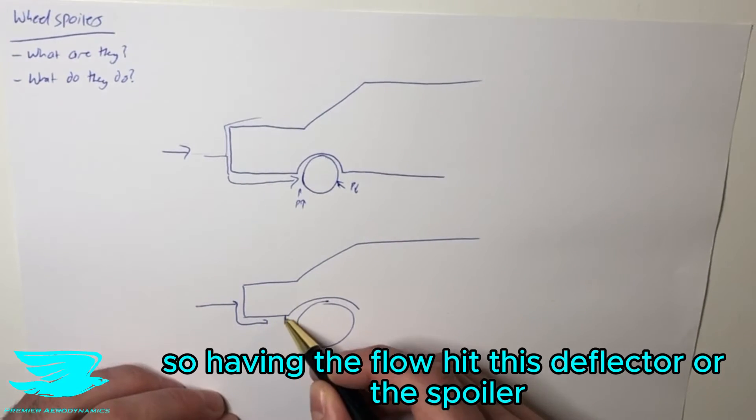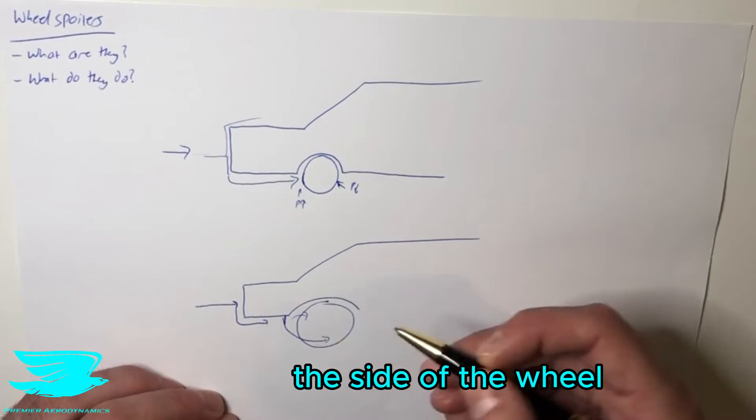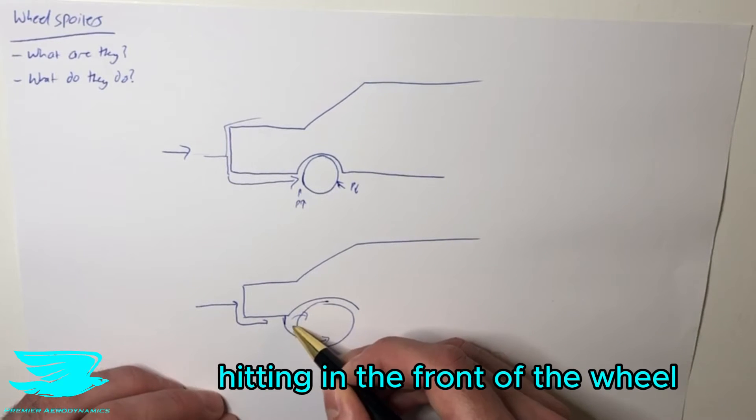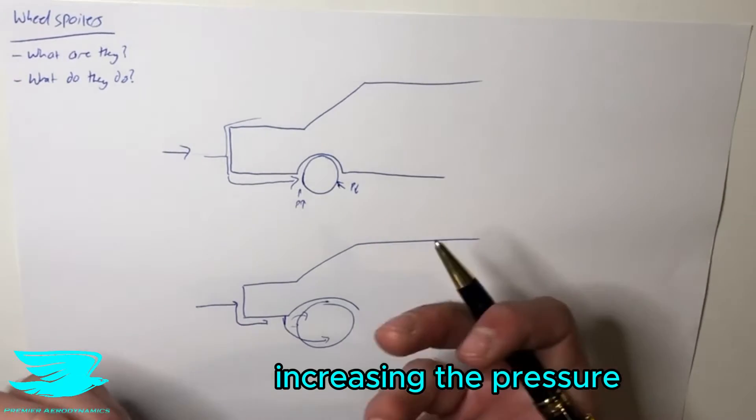By having the flow hit this deflector or spoiler, the flow comes around the sides of the wheel instead. You don't have nearly as much flow hitting the front of the wheel. As a result, there's not nearly as much flow crashing into the front, increasing the pressure.